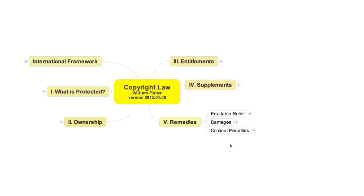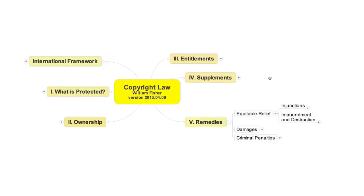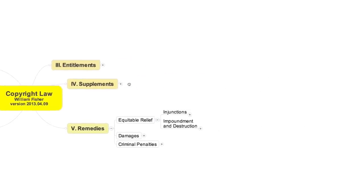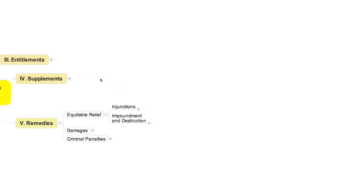The three segments of this lecture will examine these three types of remedy in sequence. The primary form of equitable relief consists of injunctions. Injunctions are orders by courts directing someone to do something or, more commonly, to stop doing something. In copyright suits, by far the most common type of injunction is an instruction to the defendant to cease engaging in the behavior that a court has deemed to be infringing.